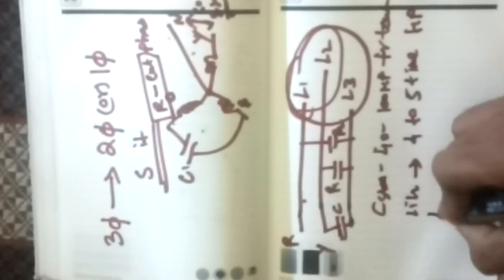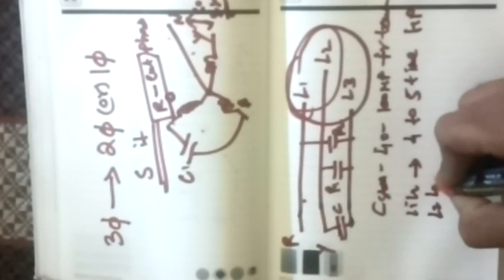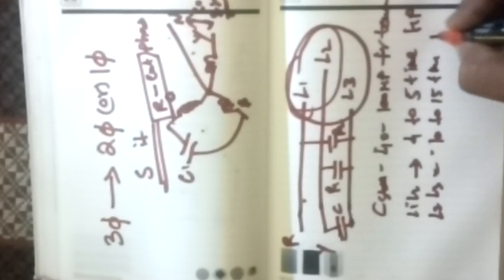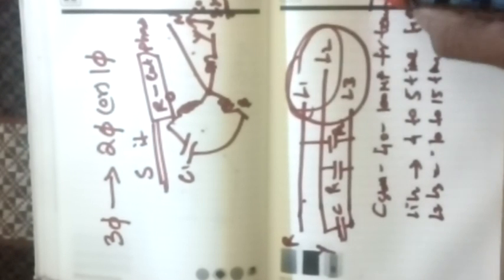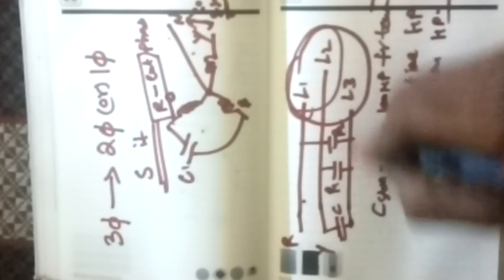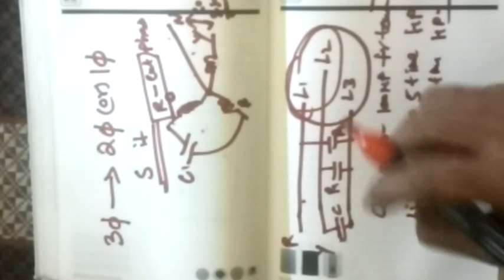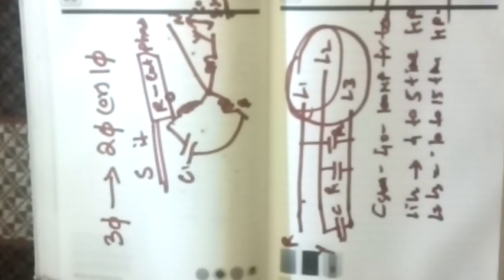Then L2 and L3, we choose 10 to 15 times of the horsepower of motor. These are the three things we take to consider choosing this capacitor. This is a very simple and easy method to start three-phase motor as a two-phase or single-phase. Thank you.